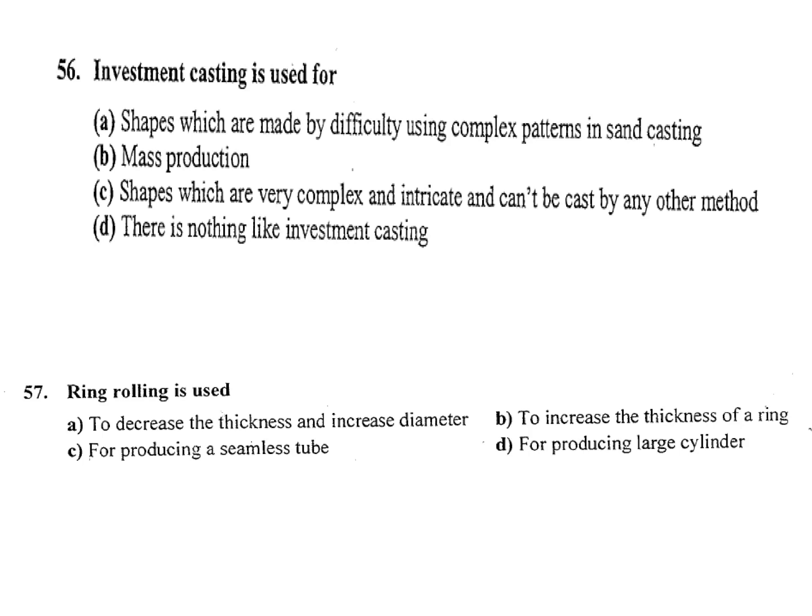Investment casting is used for: A — shapes which are made with difficulty using complex patterns in sand casting; B — mass production; C — shapes which are very complex and intricate and can't be cast by any other method; D — there is nothing like investment casting. Option D is not possible. The answer is C — shapes which are complex and intricate and can't be cast by any other method.